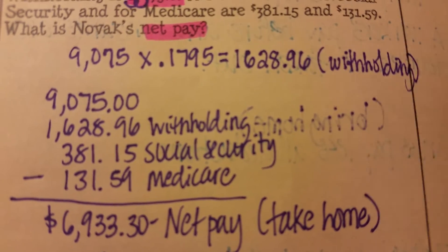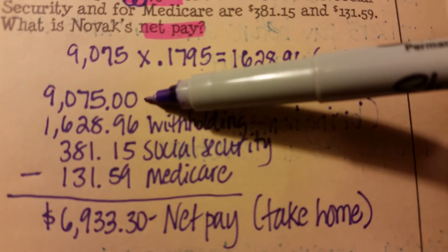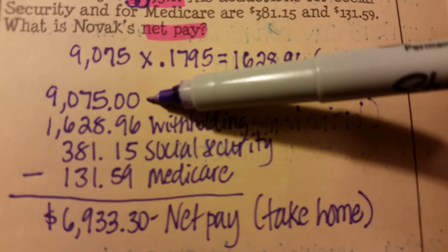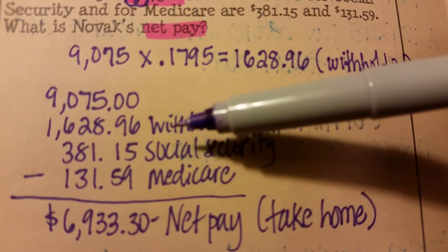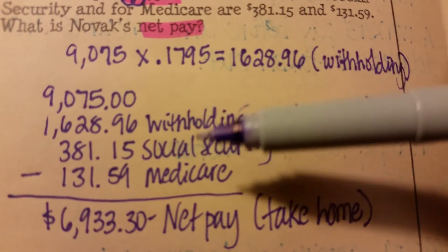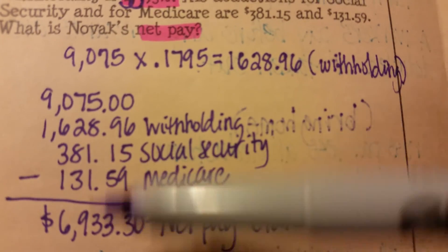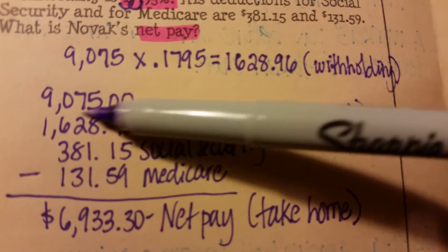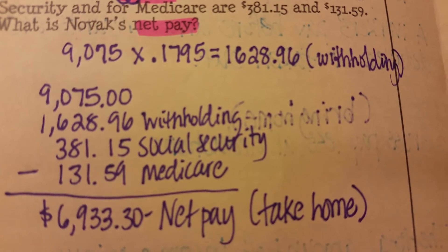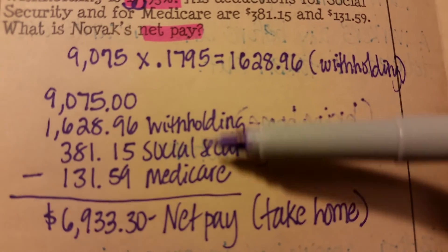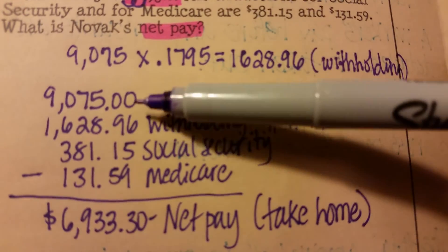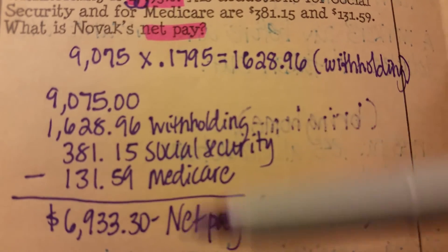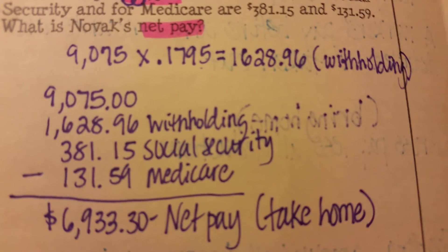Even though we make $9,075 per month, there are certain taxes. You have the federal tax taken out, Social Security, and Medicare — that's almost $3,000 you have to take out of your check. No matter how much you make, there's something going to be taken out. You're not going to take home what you make.